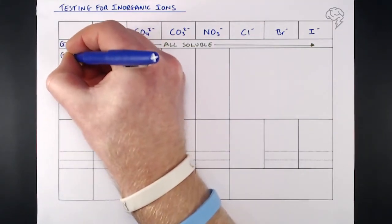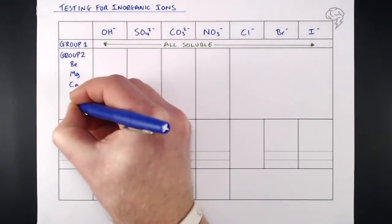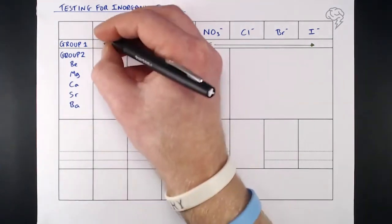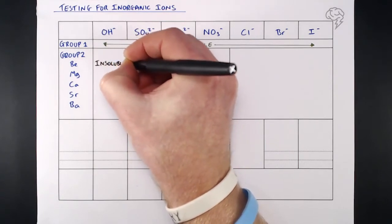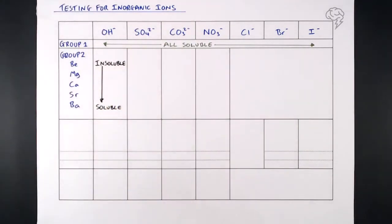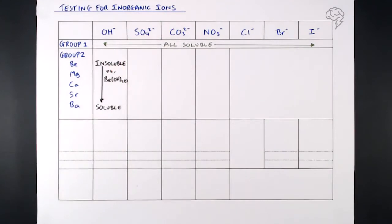Group 2 is a very different story. We need to look at these individually because there are trends in solubility within Group 2. From beryllium down to barium: when it comes to Group 2 hydroxides, they are insoluble at the top of Group 2 and soluble at the bottom. So solubility increases down the group. Beryllium hydroxide will be a white precipitate; magnesium hydroxide is also pretty insoluble. But calcium, strontium, and barium hydroxides tend to be soluble — aqueous. The solubility of Group 2 hydroxides gets higher as you go down.